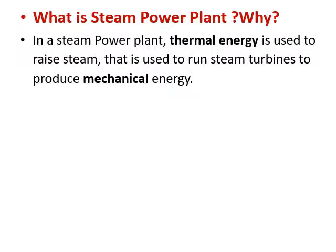In a steam power plant, the thermal energy is used to raise steam that is used to run the steam turbine to produce mechanical energy. The velocity of water in the pipeline maximum will get 10 meters per second. For saturated steam, we will get around 20 meters per second, and when it is superheated steam, it is around 40 meters per second. When it is moving in the steam pipelines, we will get a maximum velocity and RPM can be increased.